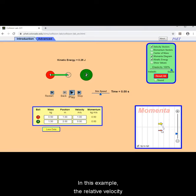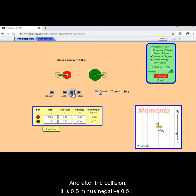In this example, the relative velocity of the two balls is 0 minus 1 meters per second before the collision. And after the collision, it is 0.5 minus negative 0.5 meters per second for a total of positive 1 meters per second.